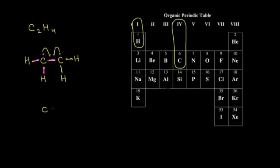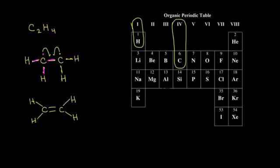So instead of only having one bond between those carbons, now there are going to be two bonds. I can go ahead and put in my hydrogens — two on each carbon. That is the correct dot structure for ethene, or ethylene. We can double check by checking the octet rule: looking at each carbon, there'd be two, four, six, and then eight electrons. So each carbon is following the octet rule.